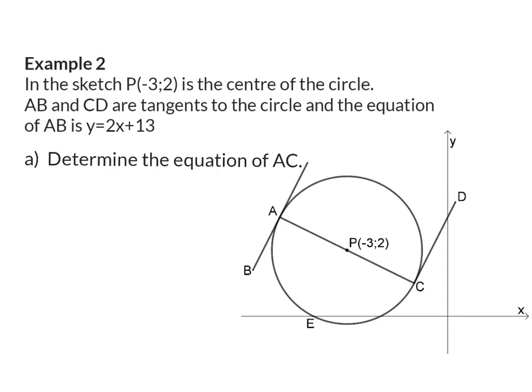Example two. In the sketch P is the center of the circle, AB and CD are tangents to the circle and the equation of AB is given as y = 2x + 13. Now the equation of the tangent is given and we will be able to use that in answering the questions.